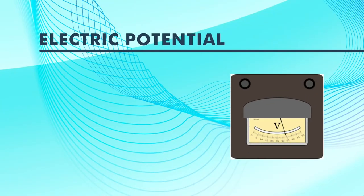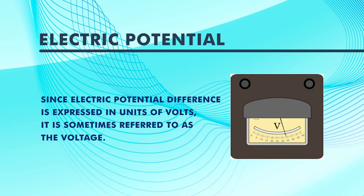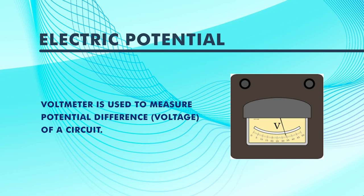Electric potential is denoted as V, which is the short form of volt, named after Alessandro Volta. You can ask students to collect information about what Volta discovered and what his experiments were. The electric potential difference is expressed in the unit of volts — that is why it is sometimes referred to as voltage. Volt is the unit of potential difference, and that potential difference is responsible for the flow of current. The property of electricity measured in volts is sometimes referred to as voltage in general terms.